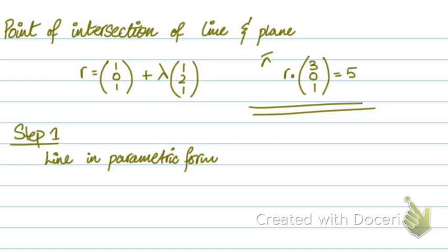Now, the first step is you express your line into parametric form. So the line will be 1 plus lambda, 2 lambda, and again 1 plus lambda. So the first step is you express your line equation from a vector form to the parametric form.